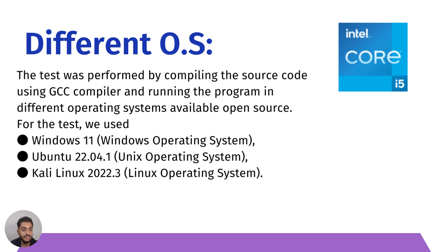The test method used the GCC compiler output. To install GCC on Kali Linux and Ubuntu, the command was sudo apt install GCC. For Windows, it was downloaded from a link provided in section 3.1. GCC was chosen because it is popular and easily installable across all three operating systems. During testing, all other applications were closed. We observed that Windows was faster than both Kali Linux and Ubuntu.